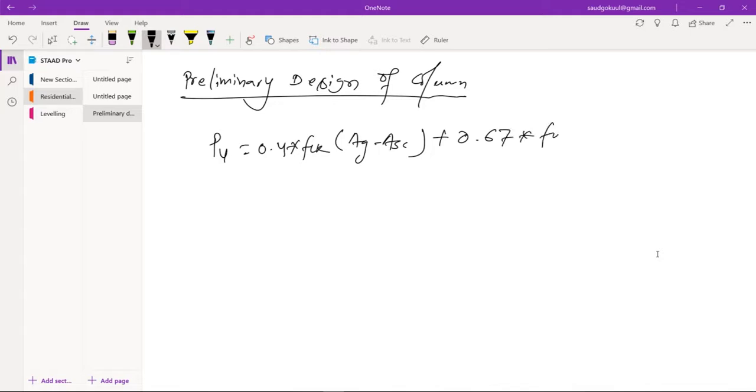Fck is the compressive strength of the concrete. Ag is the gross area of the column. Suppose the column size is 500 by 500, in that case the gross area is 500 times 500, that is 250,000. So that is the gross area of the concrete.